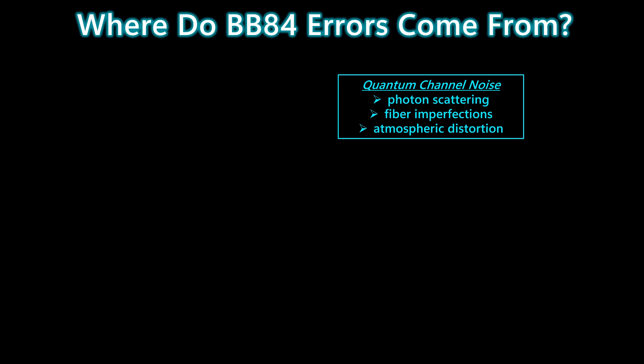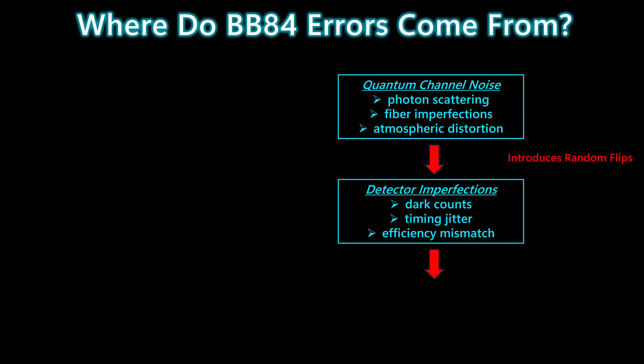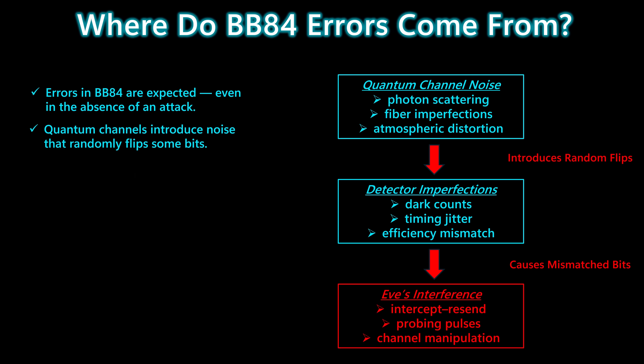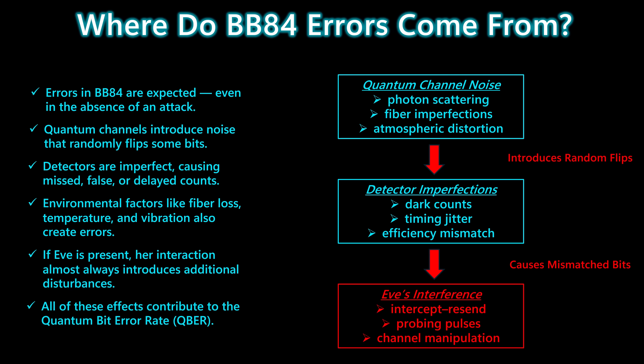Before we ever measure QBER, it's important to understand where these errors actually come from. In BB84, errors are completely normal, even when no one is attacking the system. Quantum channels introduce noise that randomly flips some of the bits Alice sends. Photons scatter, fibers bend, and the environment itself creates disturbances. On top of that, detectors aren't perfect — they produce dark counts, they misfire, and their timing isn't always precise. These imperfections can create mismatched bits even when the channel is clean. And if Eve is present, her interaction almost always adds additional disturbances, whether she's intercepting photons, sending probing pulses, or manipulating the channel. All of these effects combine to form one number: the quantum bit error rate, or QBER.